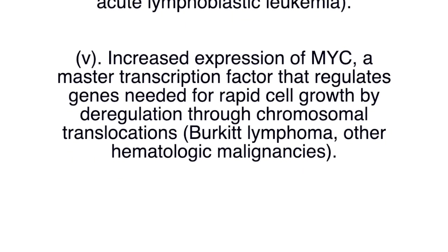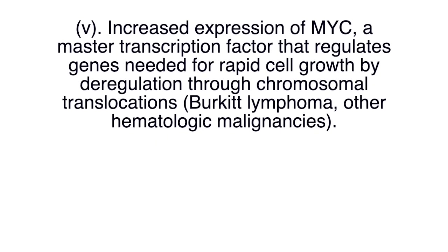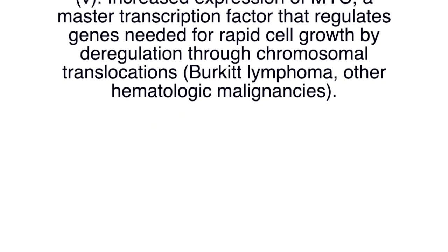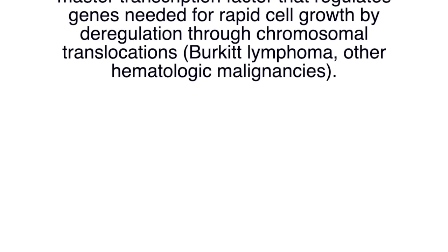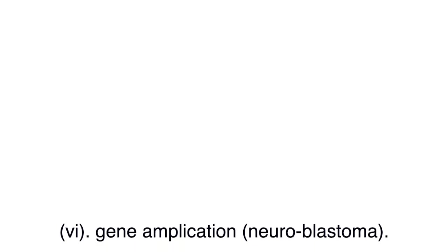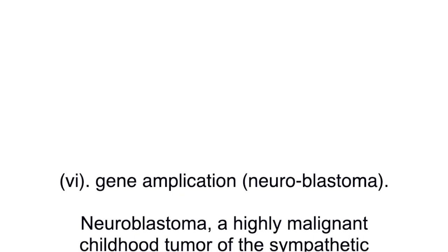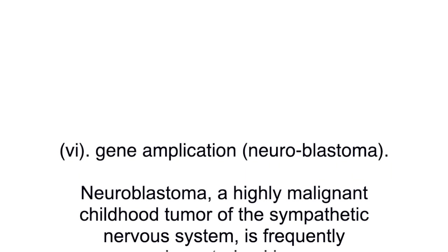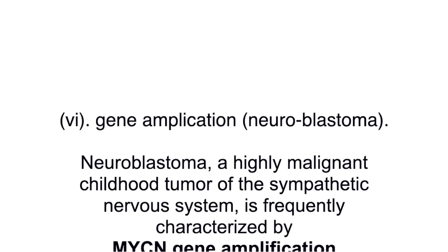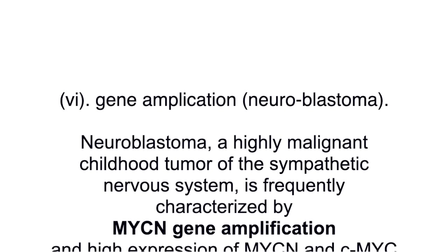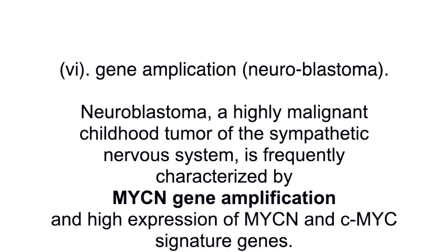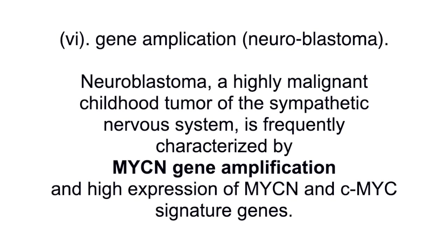Activation of the ABL non-receptor tyrosine kinase by chromosomal translocation and creation of a BCR-ABL fusion gene occurs in chronic myeloid leukemia and acute lymphoblastic leukemia. Increased expression of MYC — a master transcription factor that regulates genes needed for rapid cell growth — occurs by deregulation through chromosomal translocations, as in Burkitt lymphoma and other hematologic malignancies, as well as by gene amplification as in neuroblastoma.